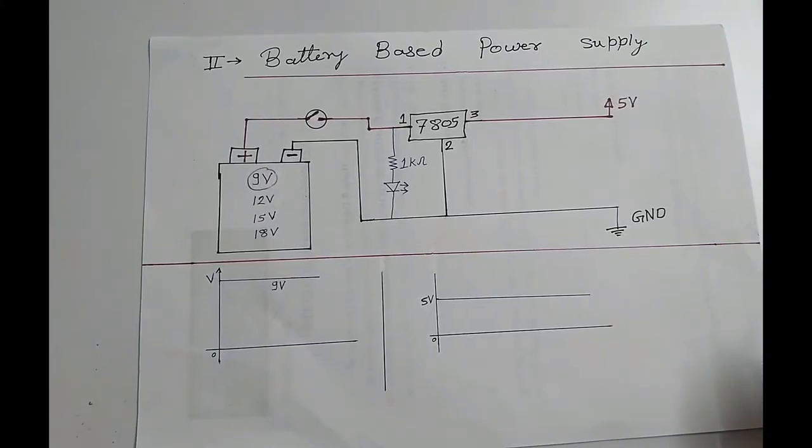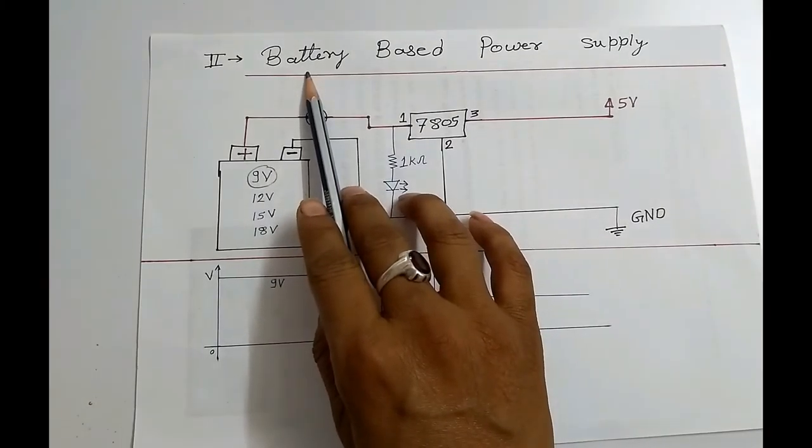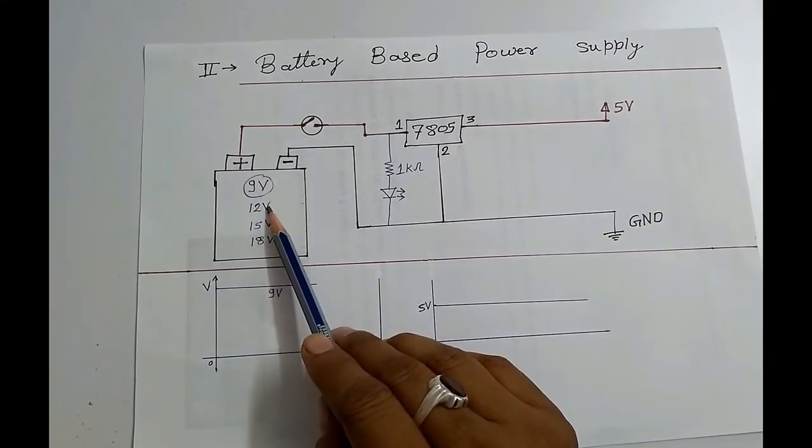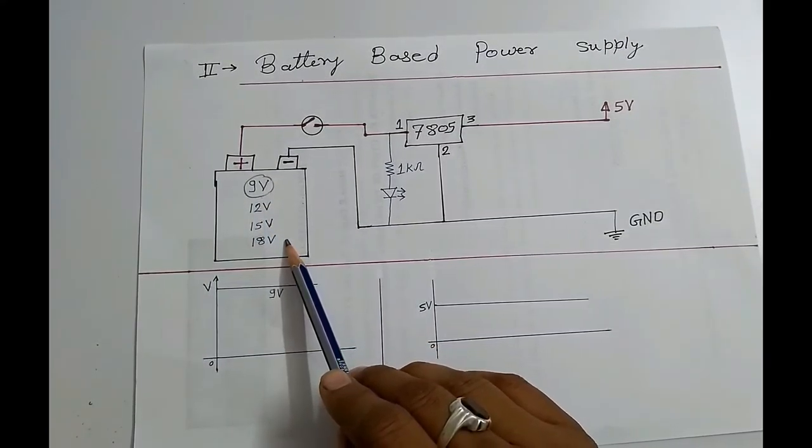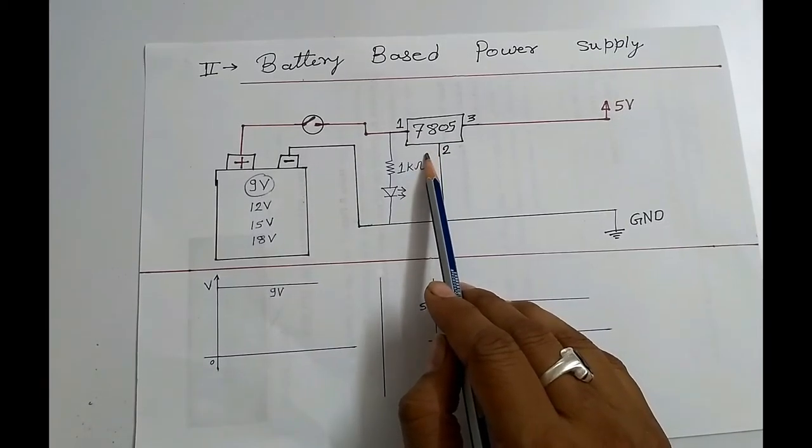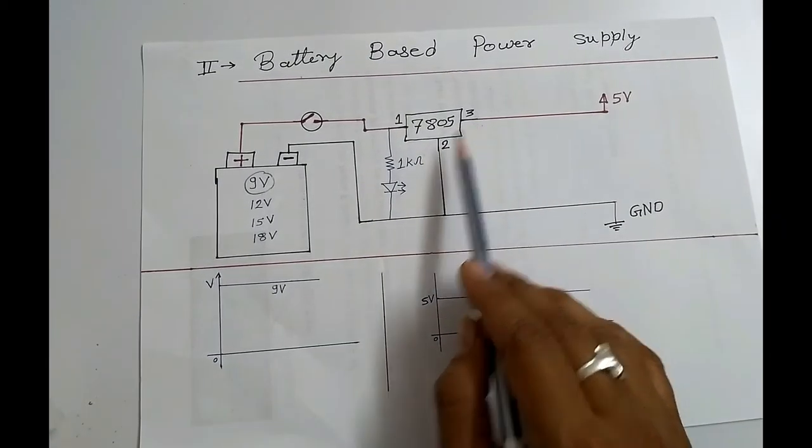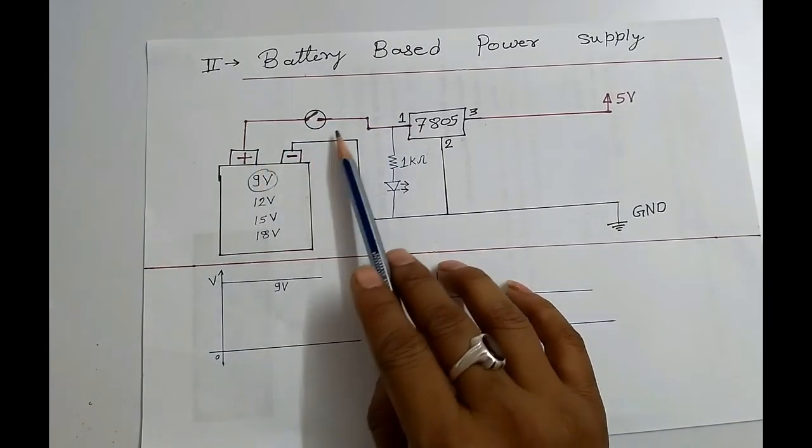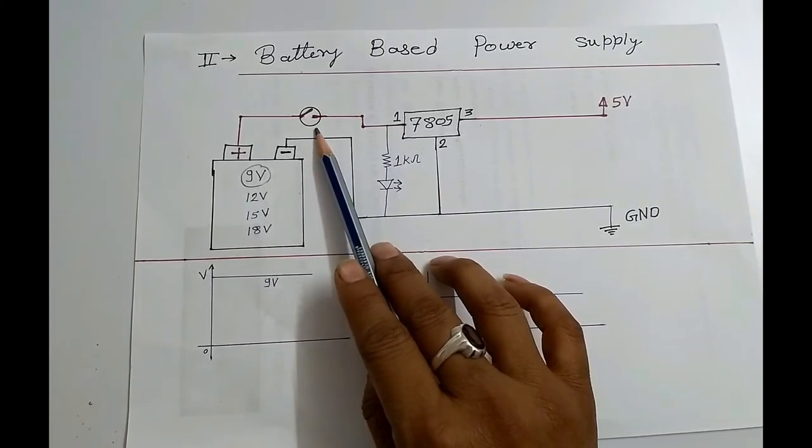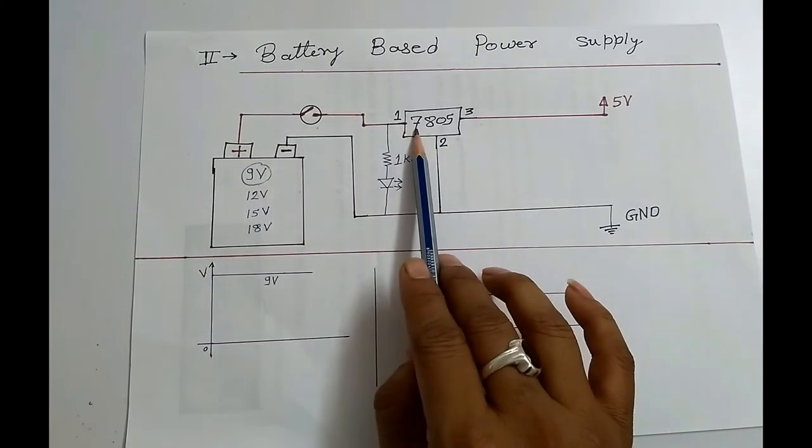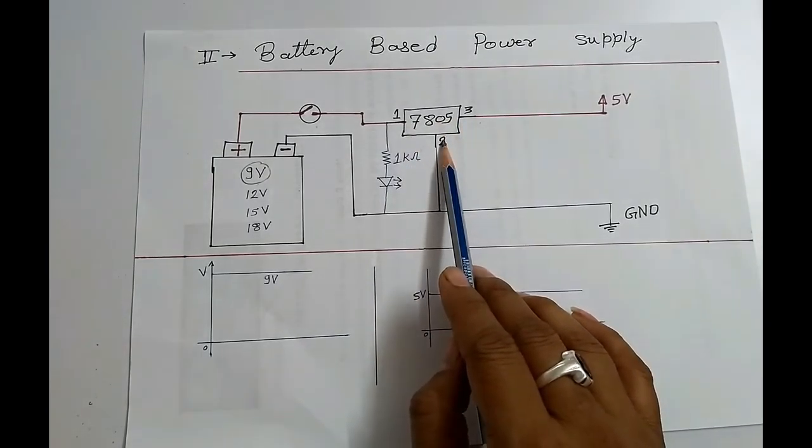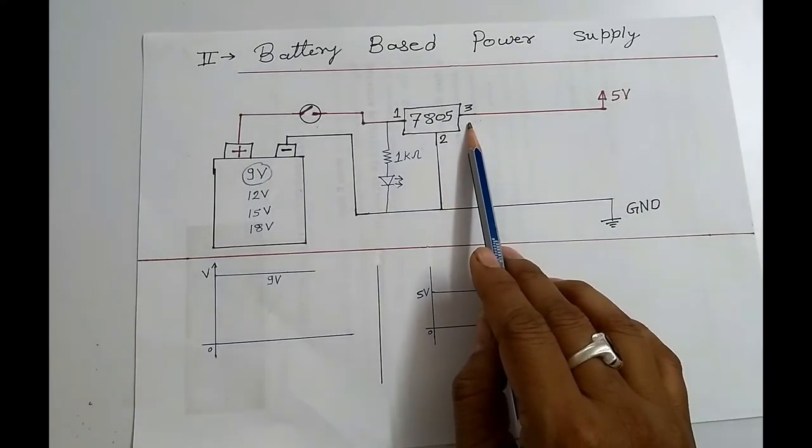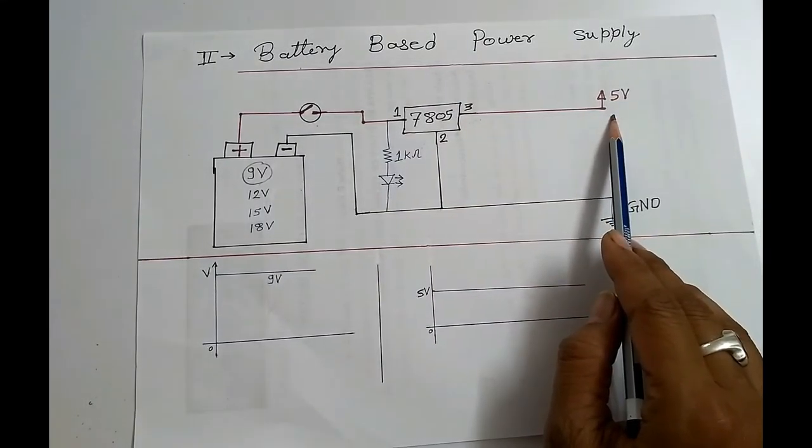Now let's have a look at second type of power supply that is based on battery. Here you can use 9V or 12V or based on your requirement. As I told you before about 7805 IC that is having three terminals. First one is connected to positive terminal of battery. Here you can use one switch for on-off purpose, or you can connect directly via wire. Moreover, second terminal of 7805 IC is connected to ground. And last, from third terminal we get 5V DC supply.